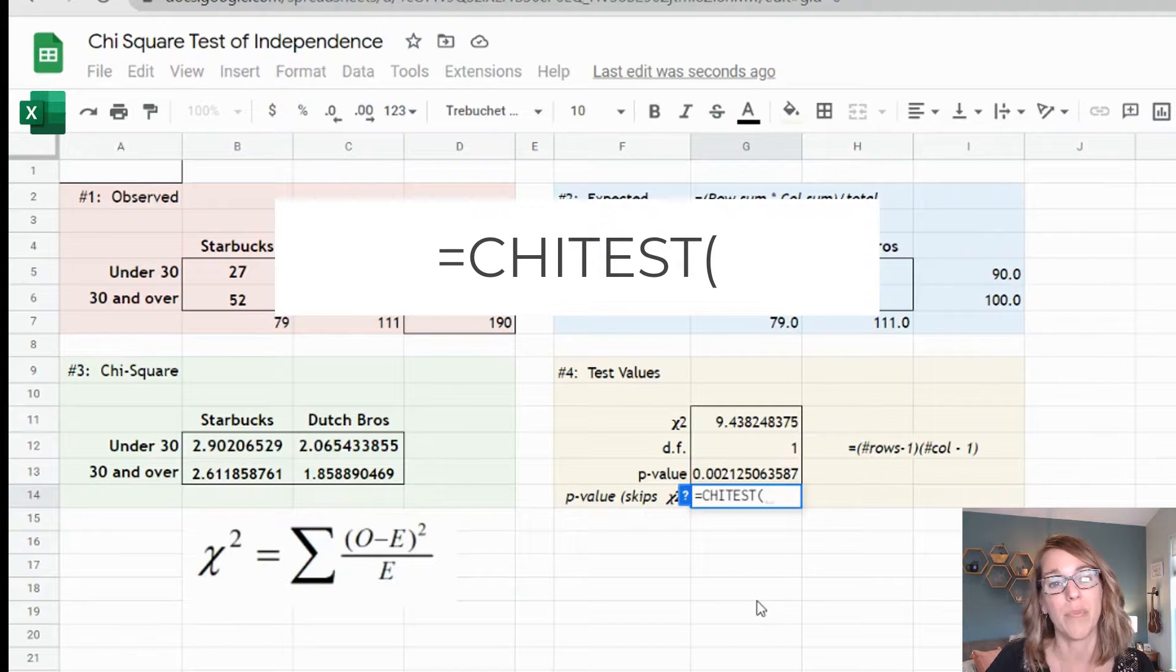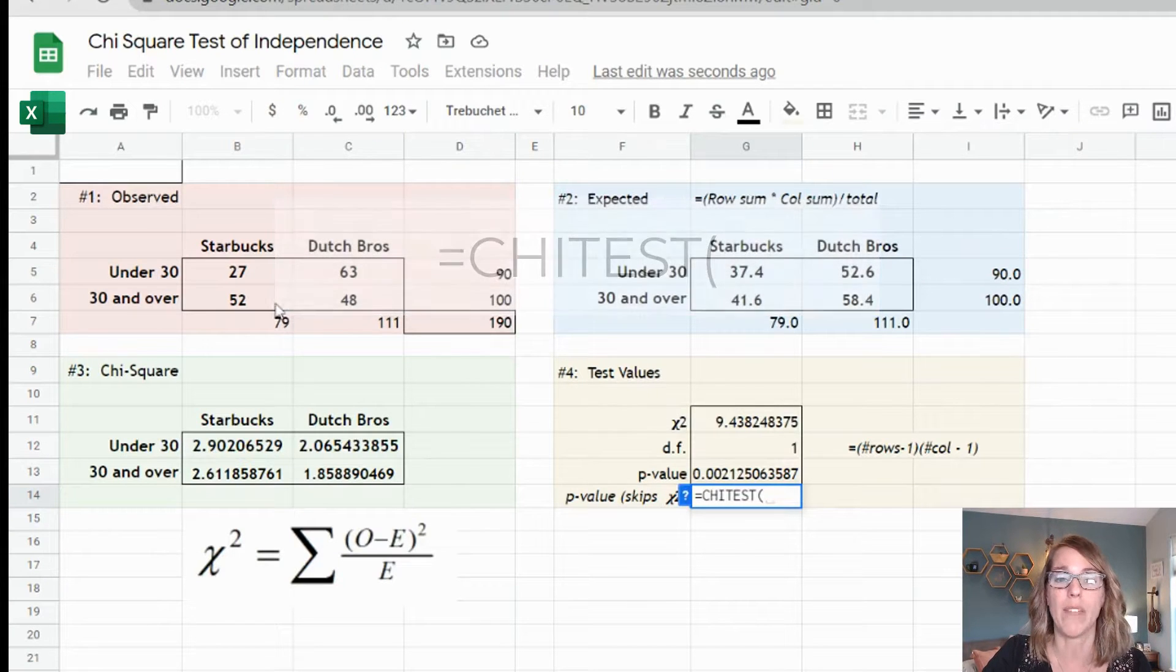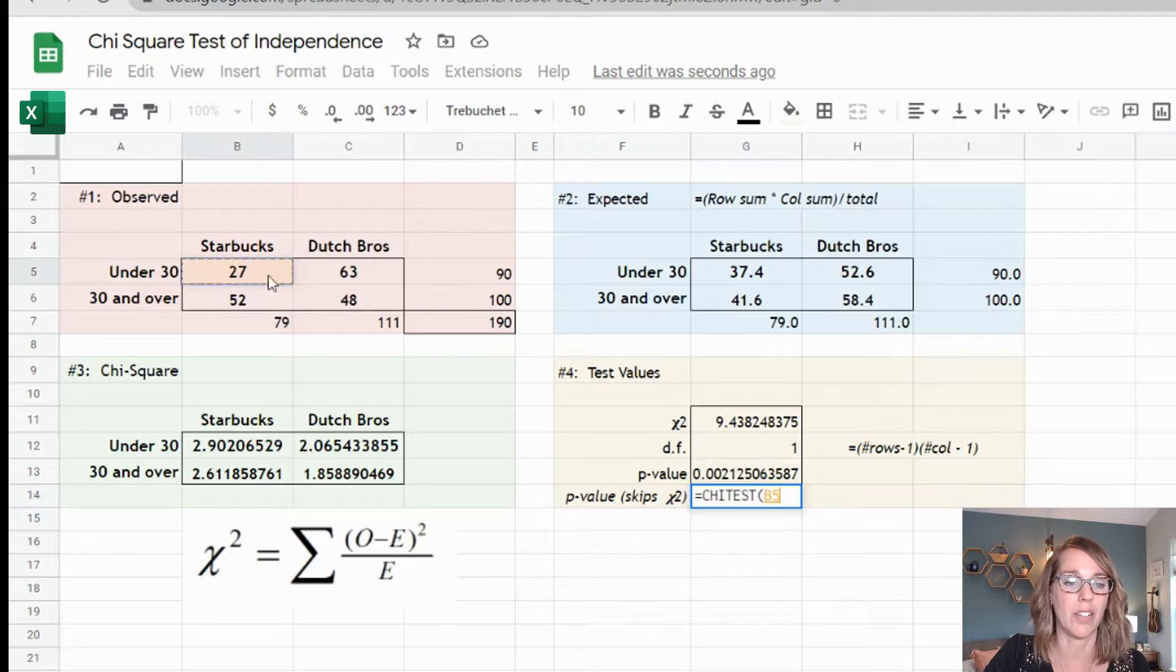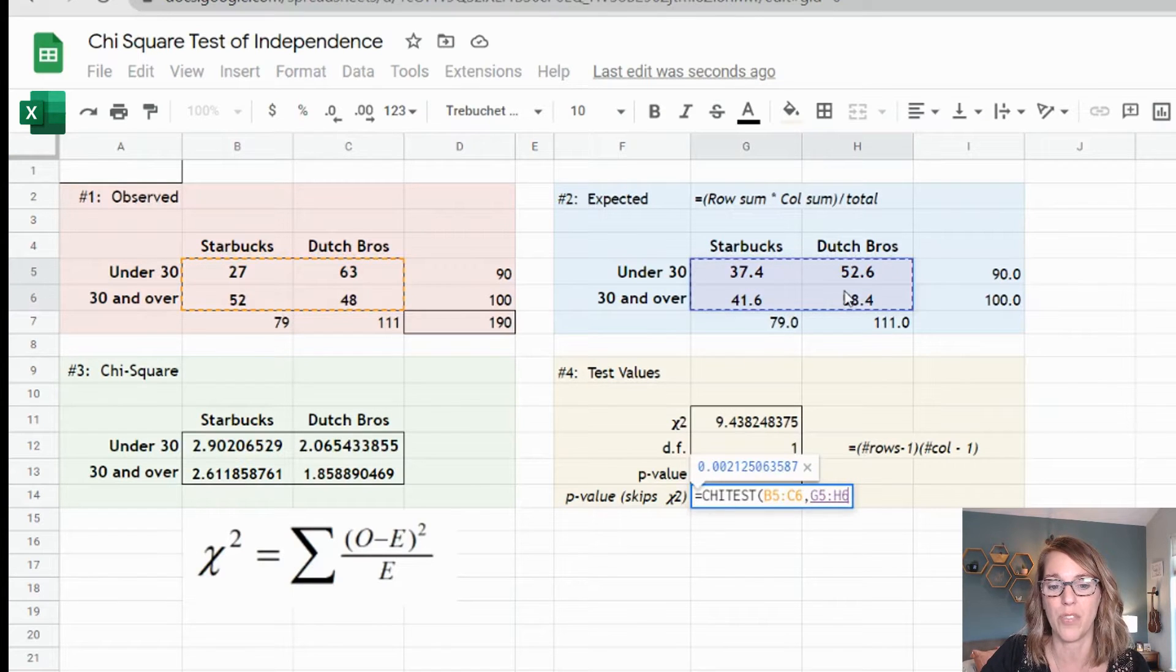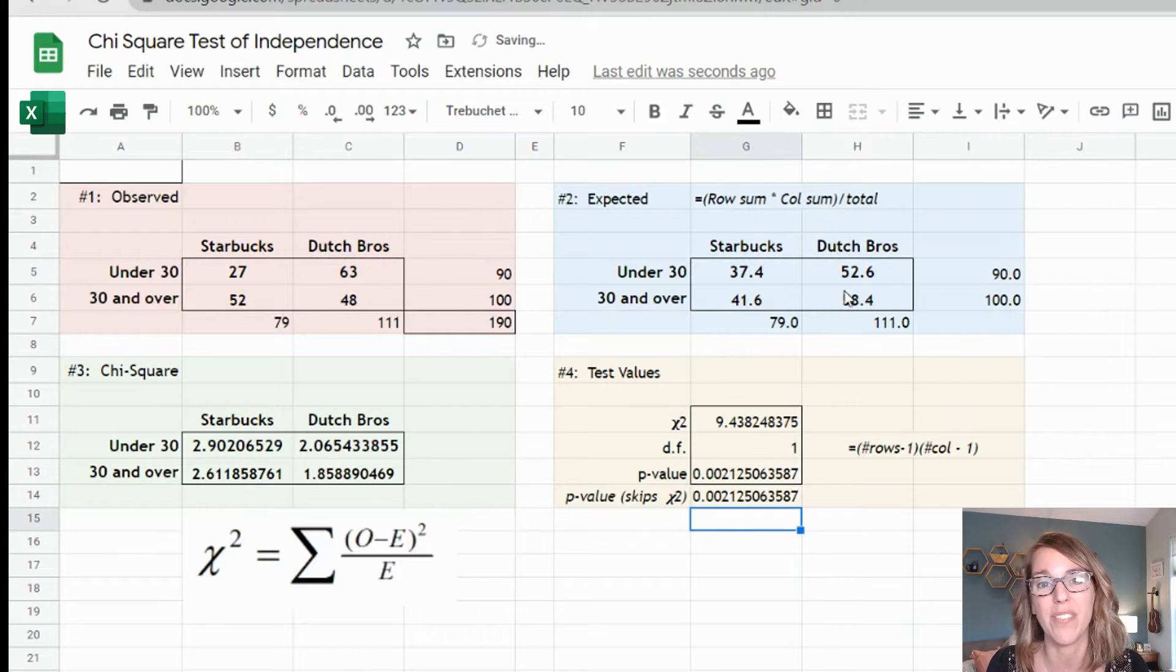The chi-test wants the observed values. So after my parenthesis I'm going to click, drag and hold over the observed values, then comma, and then my expected values. So again click, hold and drag over the expected values, then hit enter, and it gives me the very same p-value.